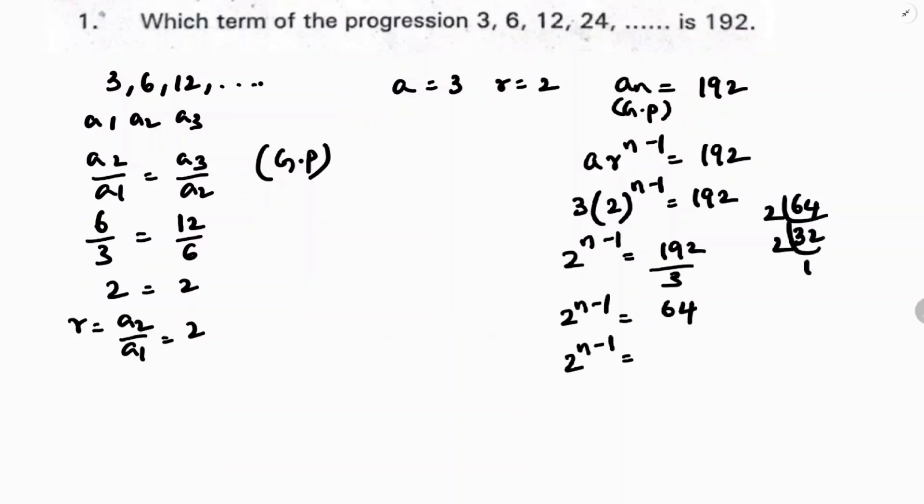64 we can write as 2 to the power 6: 2 times 32, 2 times 16, 2 times 8, 2 times 4, 2 times 2, so it is 2 to the power 6. Now bases are equal, so I can equate the powers. n equals 6 plus 1, which is 7.